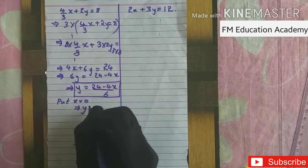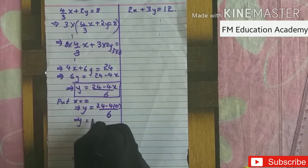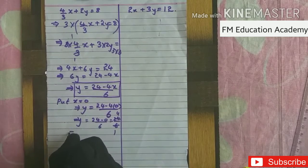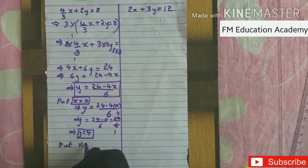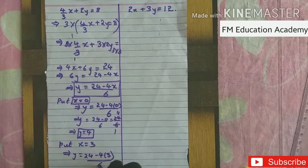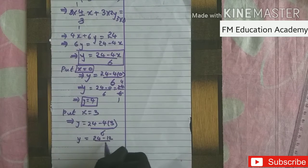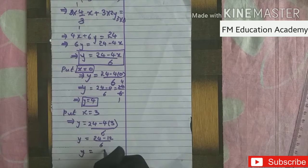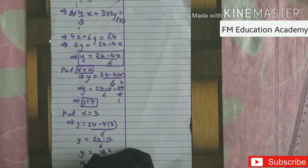Substituting x = 0: y = (24 − 0)/6 = 24/6 = 4. Substituting x = 3: y = (24 − 12)/6 = 12/6 = 2. So when x = 0, y = 4, and when x = 3, y = 2.